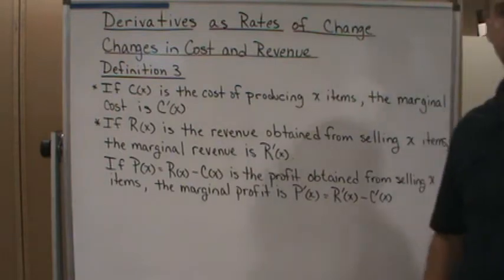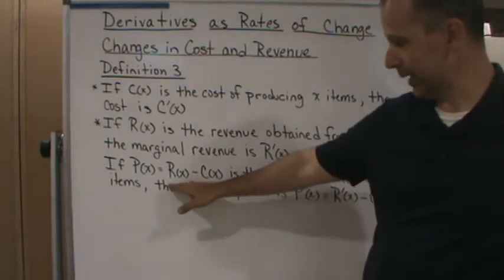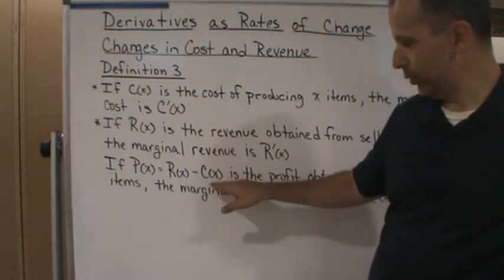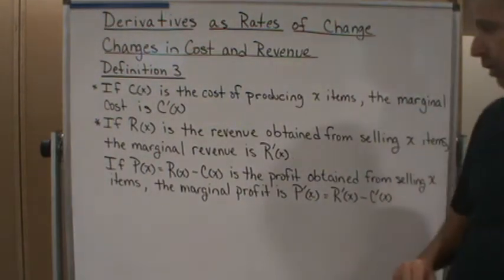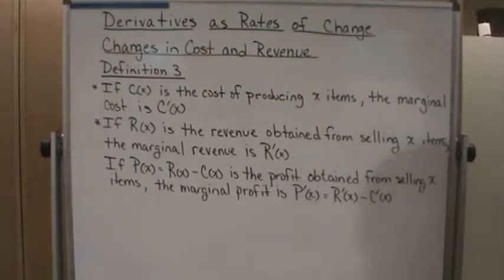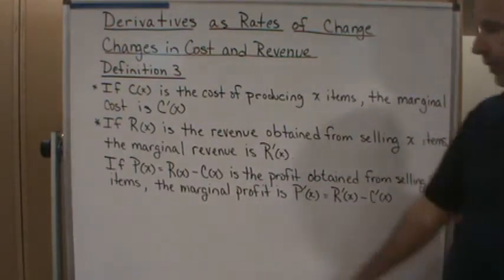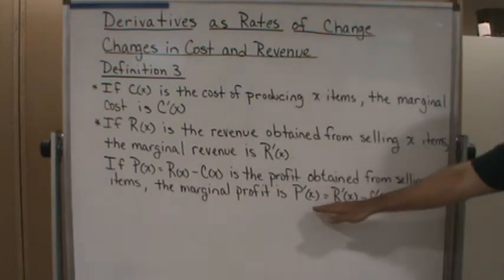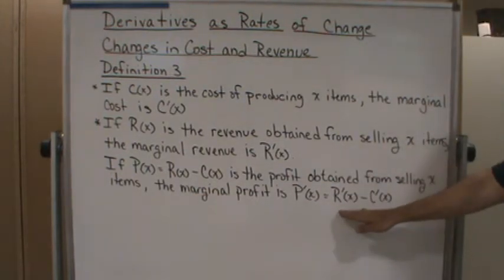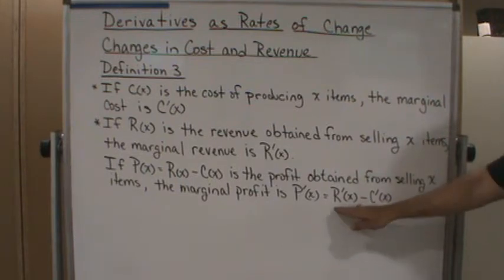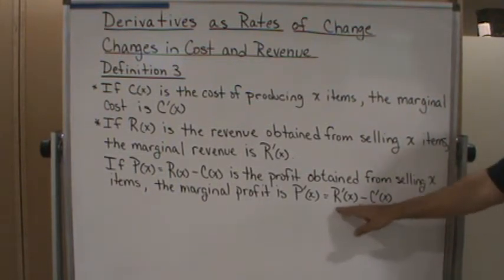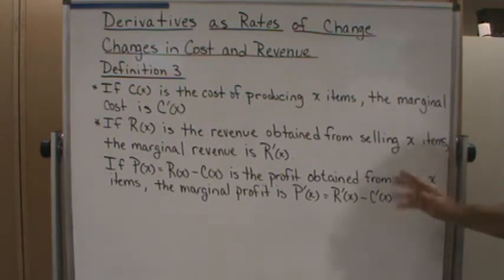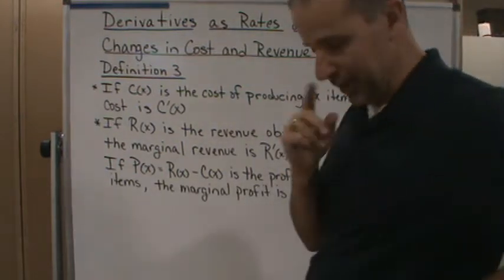The profit function is obtained by subtracting cost from revenue — R(x) minus C(x) — and represents the profit obtained from selling x items. Then the marginal profit is P'(x), which is obtained by subtracting marginal revenue and marginal cost: R'(x) minus C'(x).